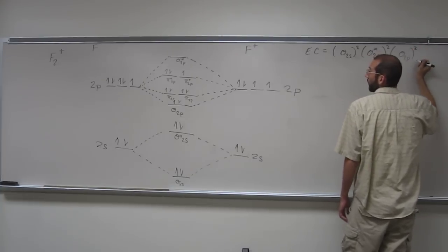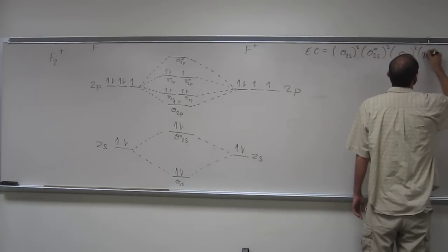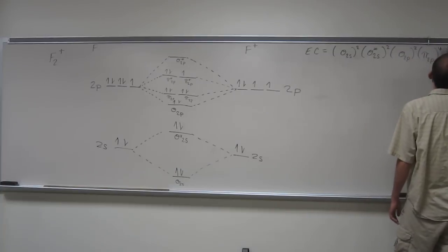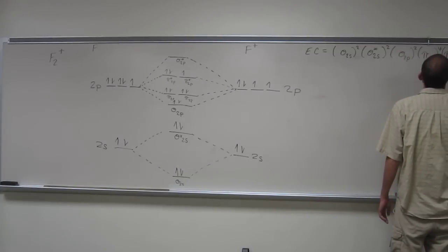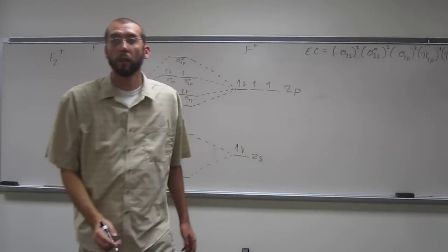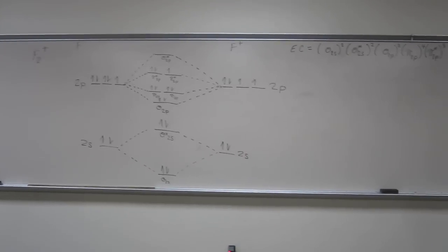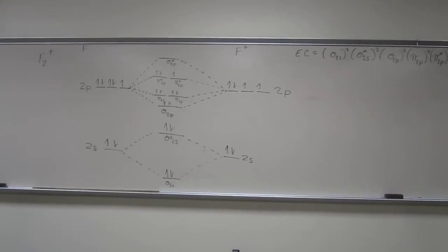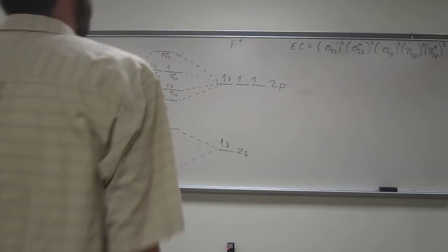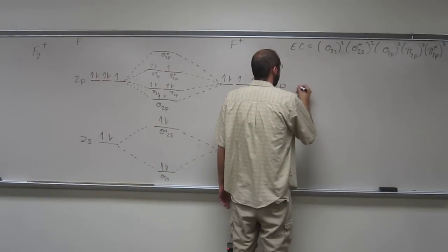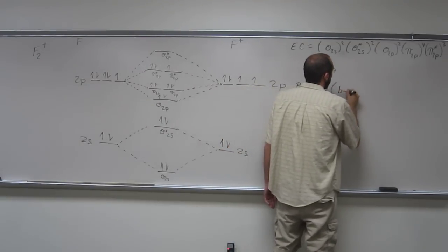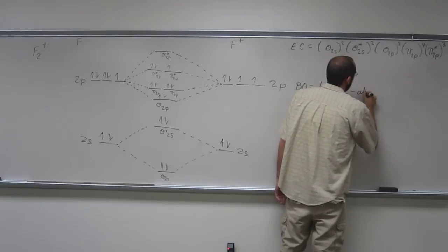Of course, it would be something I would say. Sigma star 2s2. Sigma 2p2. Pi 2p4. And hopefully you can still see this on the camera. Pi star 2p3. Make sure you can see all that. Well, at least you can see it for a second.